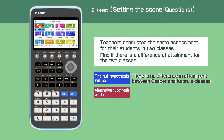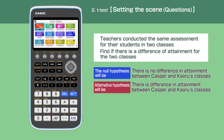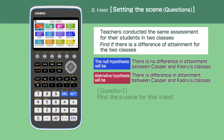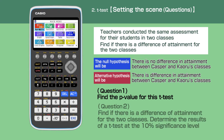The alternative hypothesis will be: there's a difference in attainment between Casper and Kaoru's classes. We are solving two questions. Question 1: Find the P-value for this T-Test. Question 2: Find if there's a difference in attainment for the two classes.